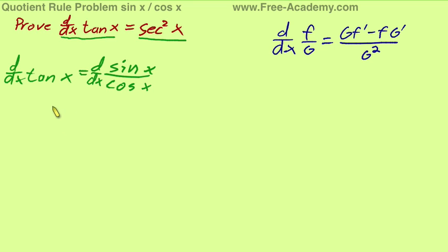By our convention, our f of x is going to be sine of x, and our g of x is going to be cosine of x.